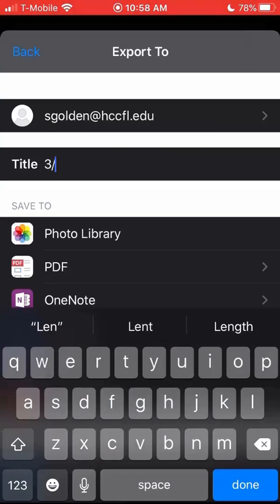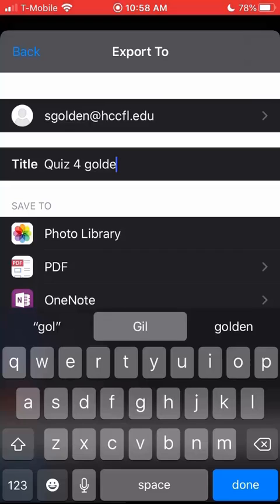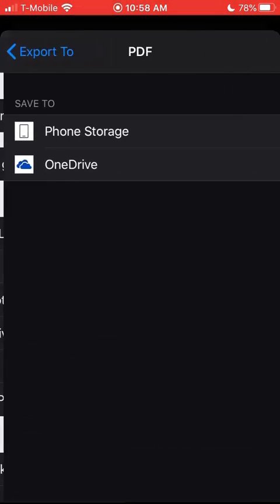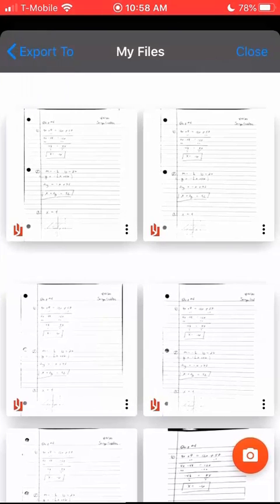I'd include the assignment name, so quiz 4, and then I would also include my last name. Again, very important that you save it as a PDF. For the storage, you can decide if you want to put it on your phone or your OneDrive. For now I'm just going to put it on my phone.